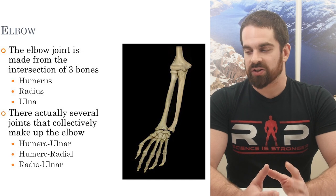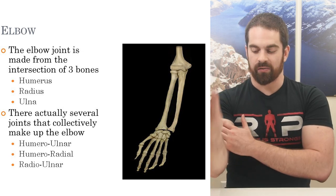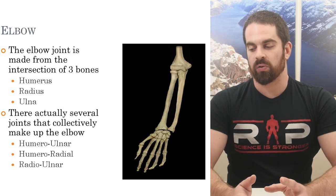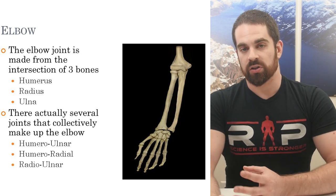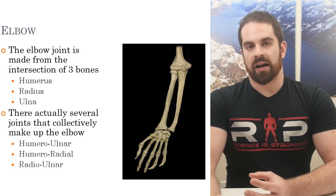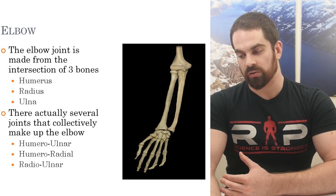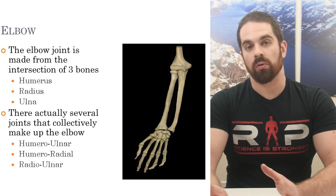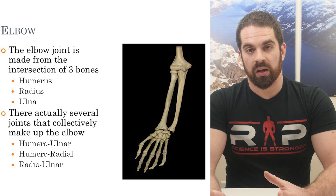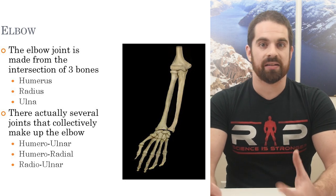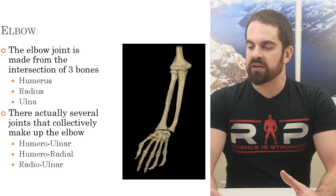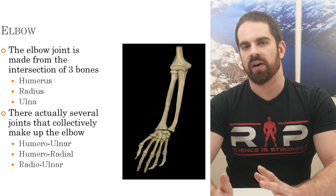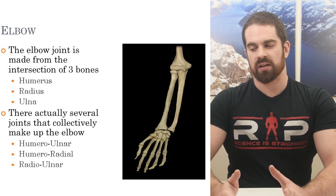The elbow is actually not just a single joint — it's three joints in one. We're looking at how the humerus interacts with the ulna (the humeral-ulnar joint), how the humerus interacts with the radius (the humeral-radial joint), and how the radius interacts with the ulna (the radial-ulnar joint). For our purposes as SES majors, we're really just going to focus on the gross movement of the elbow.